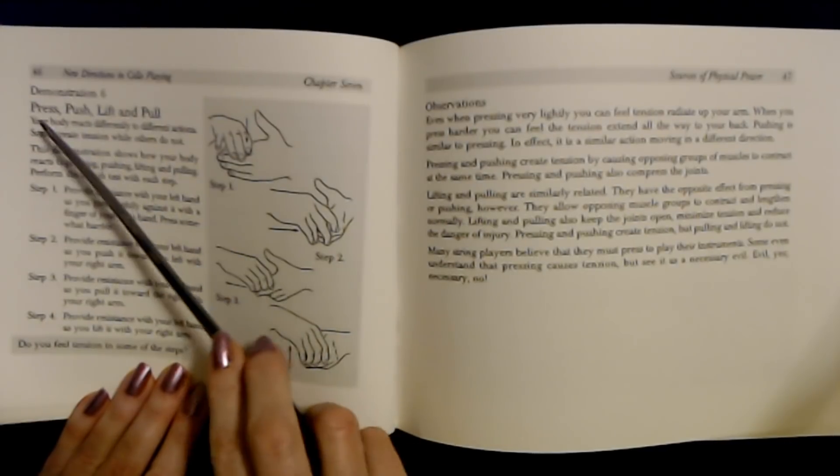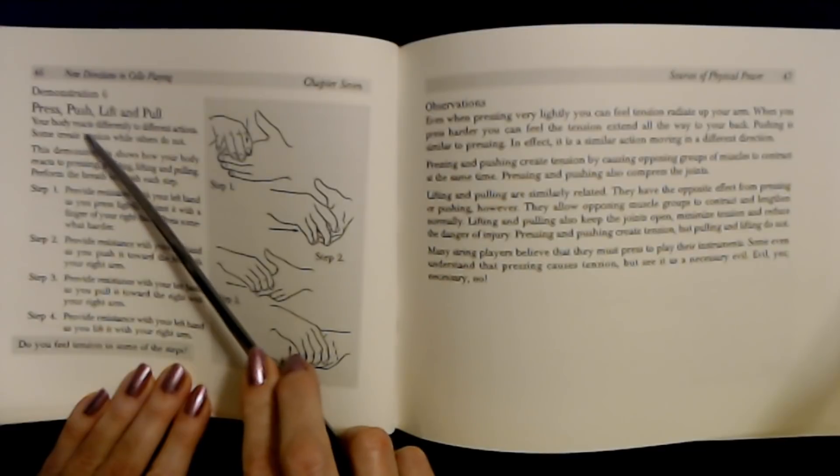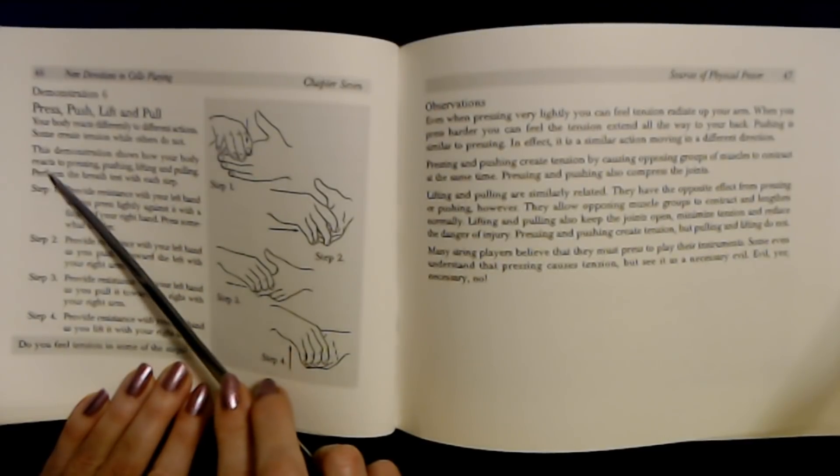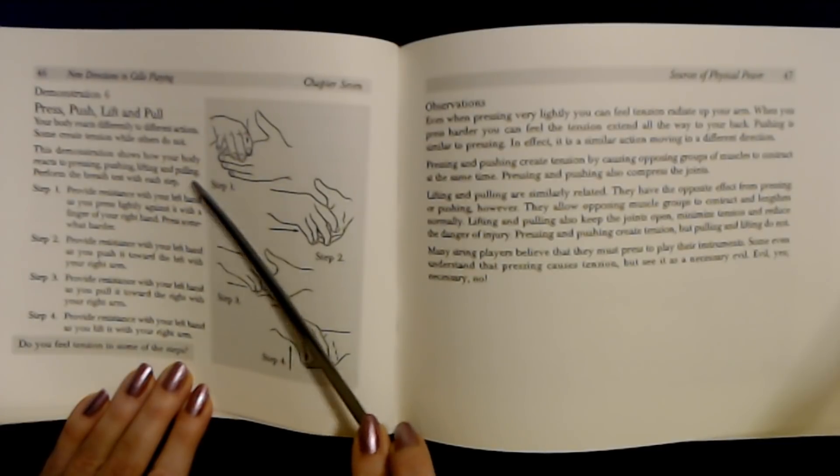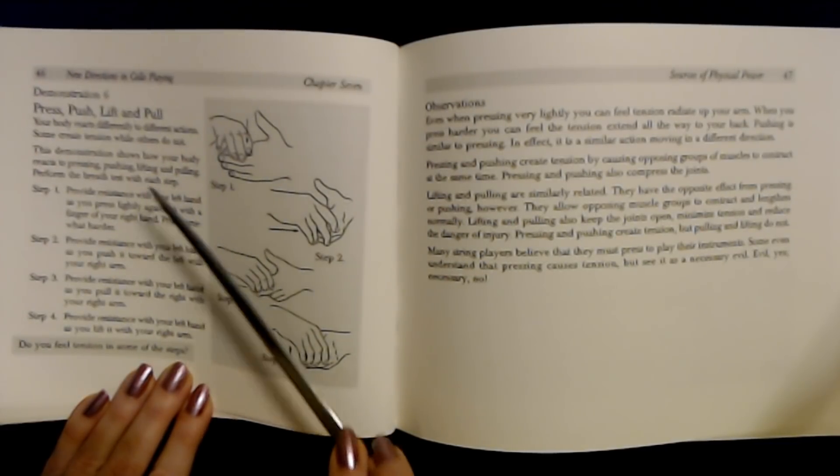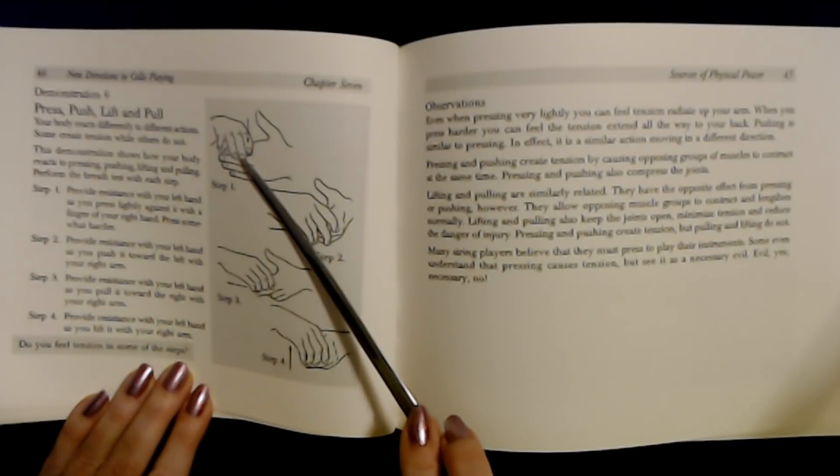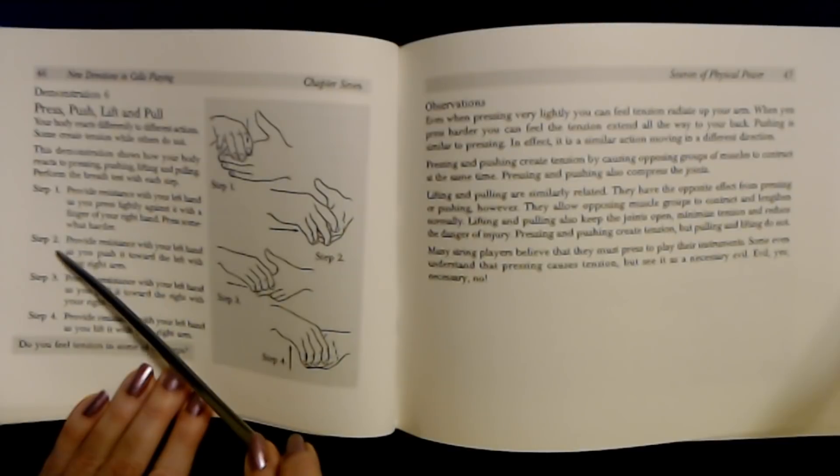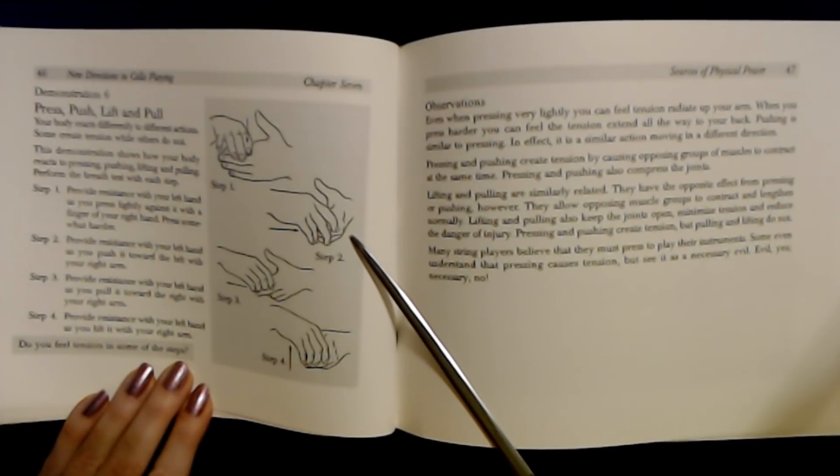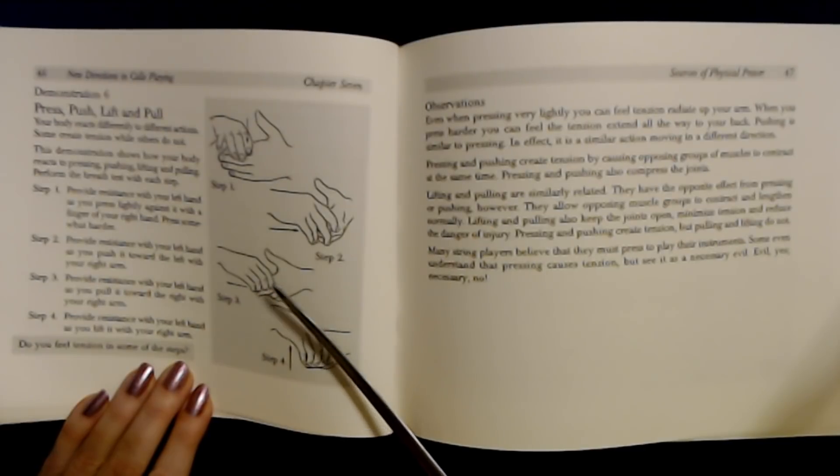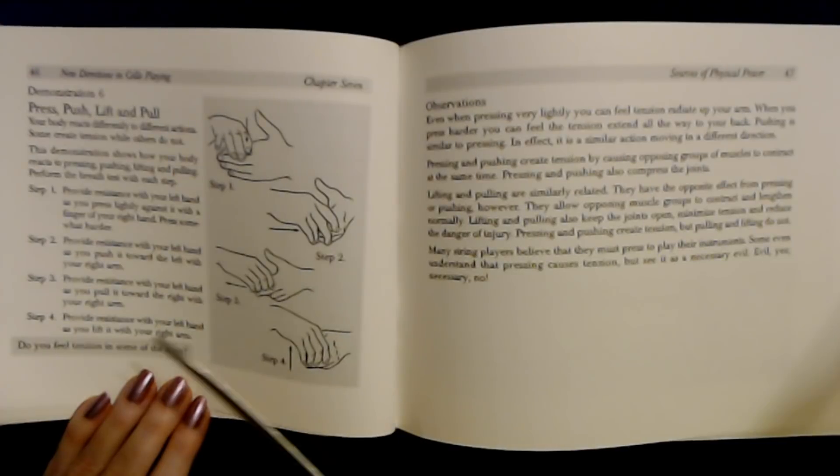Demonstration six: Pressing and pushing and lifting and pulling. Your body reacts very differently to different actions. Some create tension while others do not. This demonstration shows how your body reacts to pressing, pushing, lifting, and pulling. Perform the breath test with each step. Step one: Provide resistance with your left hand as you press lightly with the finger of your right hand, then press harder. Step two: Provide resistance with your left hand as you push gently with your right arm.